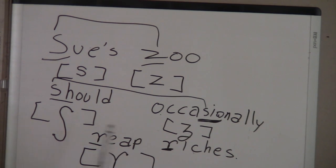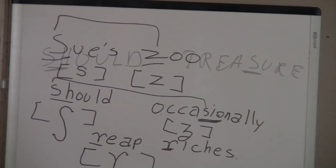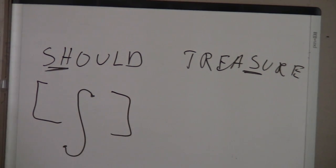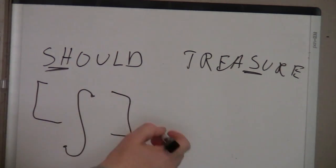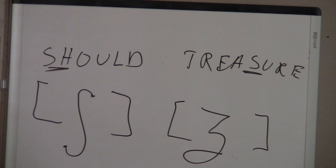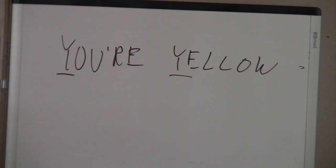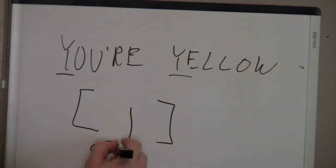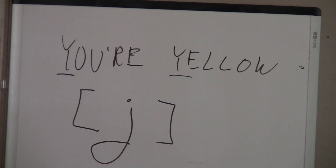Let's write these symbols one more time: the sh symbol and the zh symbol as in 'treasure.' The next symbol is the yuh sound. Be careful — it looks like a lowercase j, but it makes the sound of yuh, as in 'your,' 'yellow.' It goes below the line of the page. That's yuh, as in 'your,' 'yummy,' 'you,' 'year.'